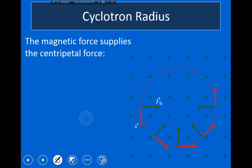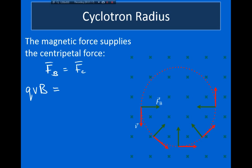We can set the magnetic force equal to the centripetal force. The magnetic force is qvB times sine of the angle between velocity and magnetic field. Since the velocity and magnetic field are 90 degrees apart, sine of 90 is one, so the magnetic force is just qvB. This equals the centripetal force mv²/r. Solving for the radius — called the cyclotron radius — one velocity cancels, giving the cyclotron radius equal to mv divided by qB.